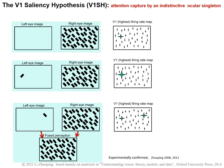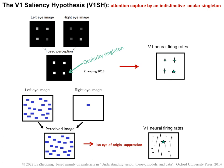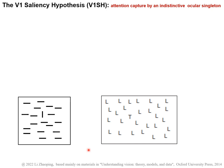Saliency by an ocular singleton can be extended to saliency by ocularity in a general way. This item is an ocularity singleton — it has a stronger input from the right eye, while other items have stronger inputs from the left eye, and is therefore salient due to the same iso-eye-of-origin suppression. Compared to finding a vertical bar among horizontal bars, it's much harder to find a letter T among letter L's, since the letter T is a particular combination of a vertical bar and a horizontal bar, and neither the vertical feature nor the horizontal feature is unique in the image to make that location salient.